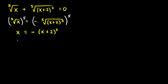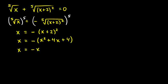Now this we can solve. We expand x plus 2 squared as x squared plus 4x plus 4, then distribute the negative sign. So we get x equals negative x squared minus 4x minus 4.